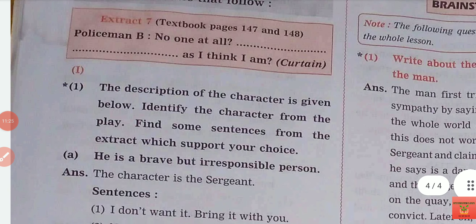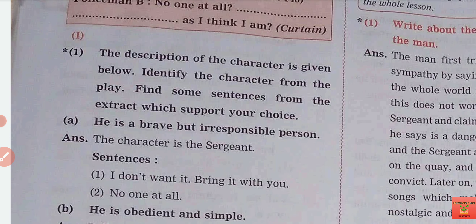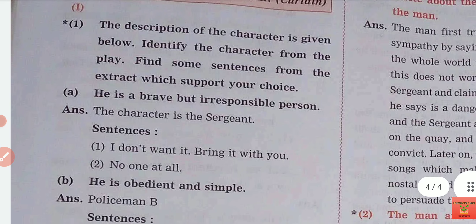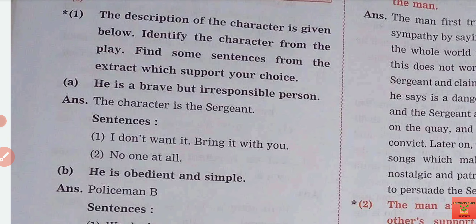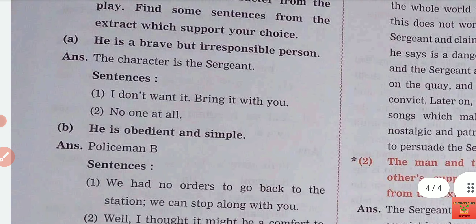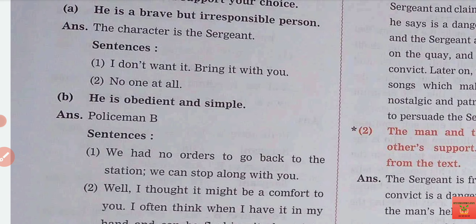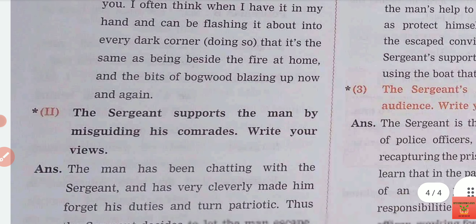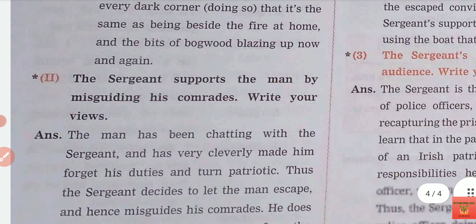Let's look at the 7th extract question answers. The description of the character is given below — identify the character from the play and find some sentences from the extract which support your choice. The question is: he is a brave but irresponsible person. Whose character trait is this? Again, it is the sergeant's character trait. You have to tell those sentences. Second: he is an obedient and simple police. You just want to point out which sentence shows that.